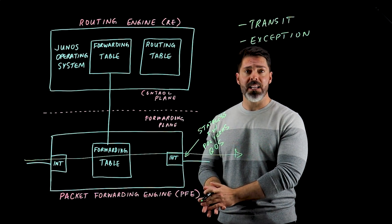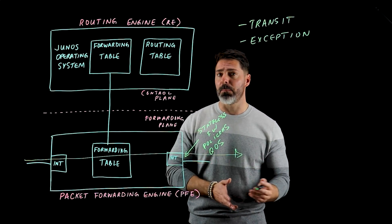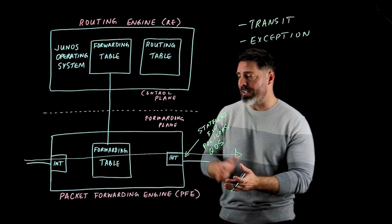A packet comes in, we consult the local forwarding table and make a decision as to where it goes, and then we simply forward that traffic out the respective interface based on that forwarding table lookup.